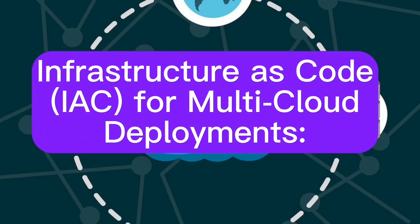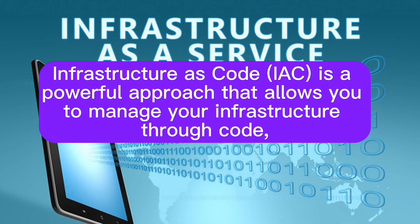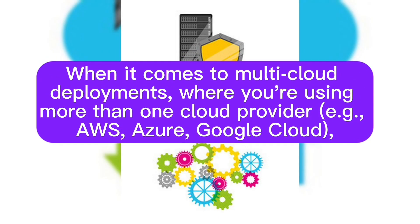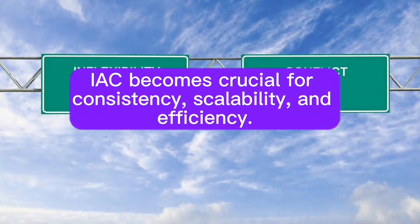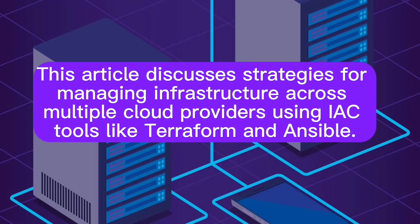Infrastructure as Code (IAC) for multi-cloud deployments. IAC is a powerful approach that allows you to manage your infrastructure through code, making it easier to provision, configure, and maintain resources. When it comes to multi-cloud deployments — where you're using more than one cloud provider, for example AWS, Azure, or Google Cloud — IAC becomes crucial for consistency, scalability, and efficiency. This article discusses strategies for managing infrastructure across multiple cloud providers using IAC tools like Terraform and Ansible.